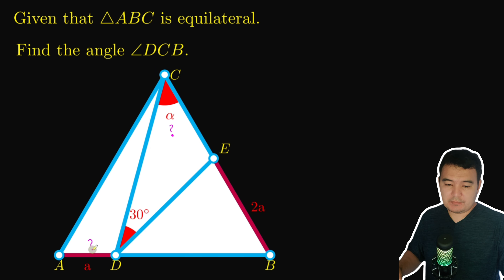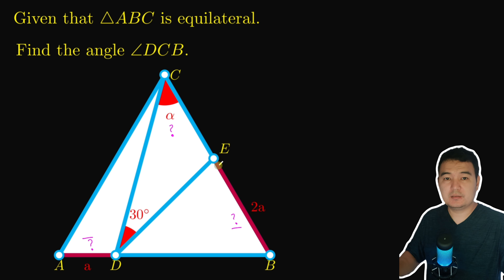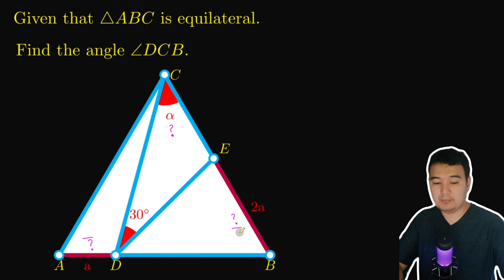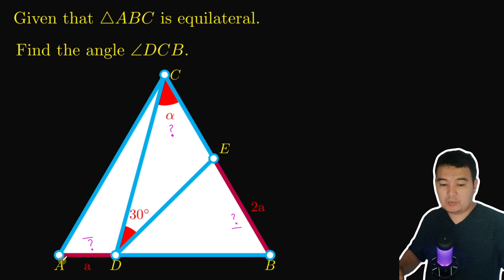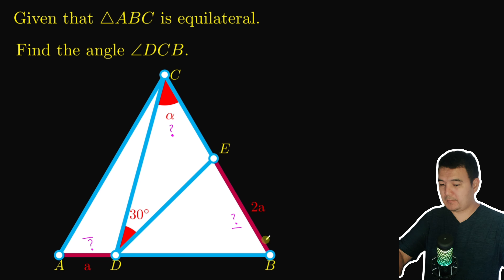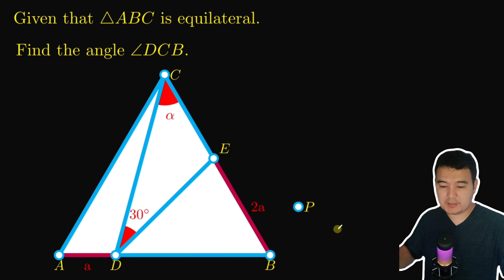To solve this, we use the given relation between the two segments — AD is twice shorter than EB. We need to make a connection between them. One way is to take segment AD and place it somewhere close to EB.